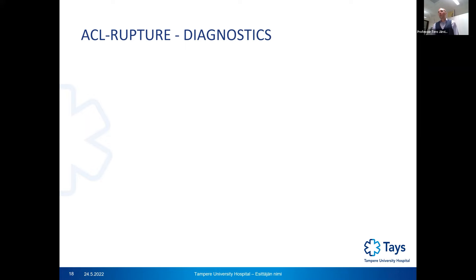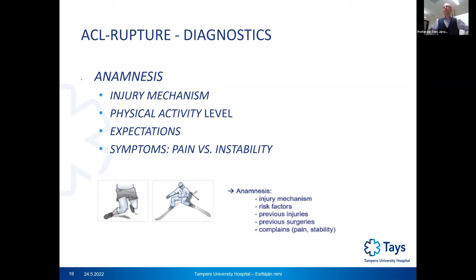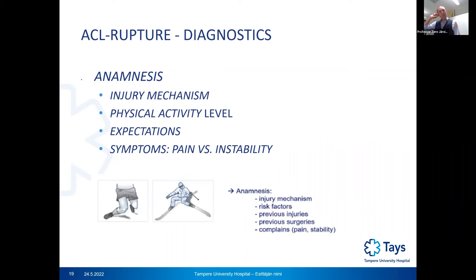For diagnostics, hemarthrosis already suggests ACL rupture. The history should cover the injury mechanism — there must always be a trauma; ACL rupture is never a degenerative disorder. You also need to know the patient's physical activity level, and most crucially, whether the main symptom is pain or instability of the knee joint. That is the most important thing to establish.